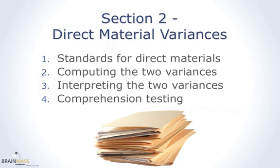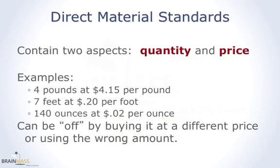We're going to show you the standards for direct materials, how to compute the two variances, how to interpret them, and then we'll do some comprehension testing to be sure you have a solid understanding. Direct material variances contain two pieces: the quantity and the price.